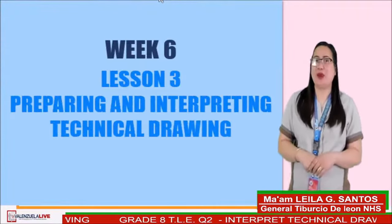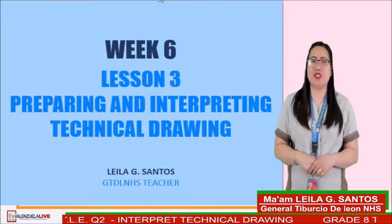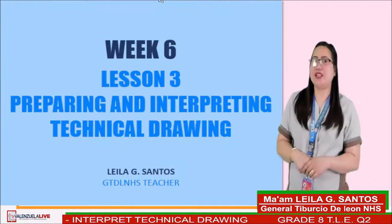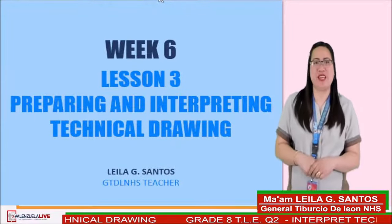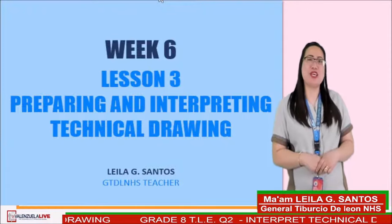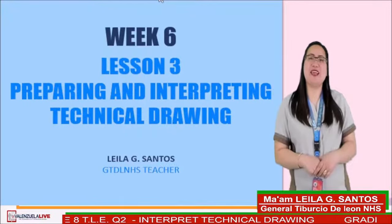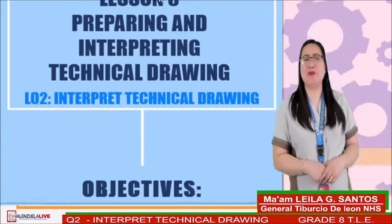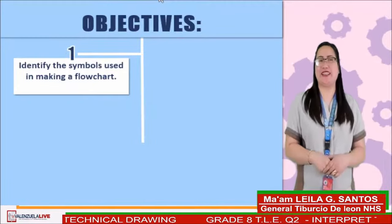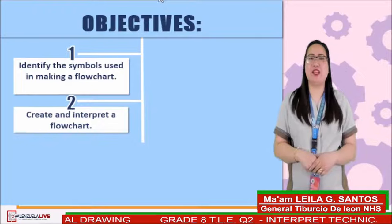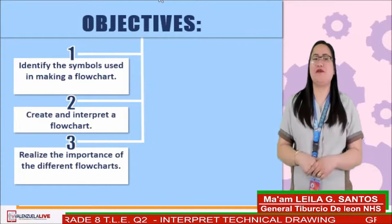Today, based on the most essential learning competencies by the Department of Education, our Lesson 3 for CSS is preparing and interpreting technical drawing. We will be focusing on Learning Outcome Number 2: Interpret Technical Drawing. At the end of the session, you should be able to: Number 1, identify the symbols used in making a flowchart; Number 2, create and interpret a flowchart; and Number 3, realize the importance of the different flowcharts.